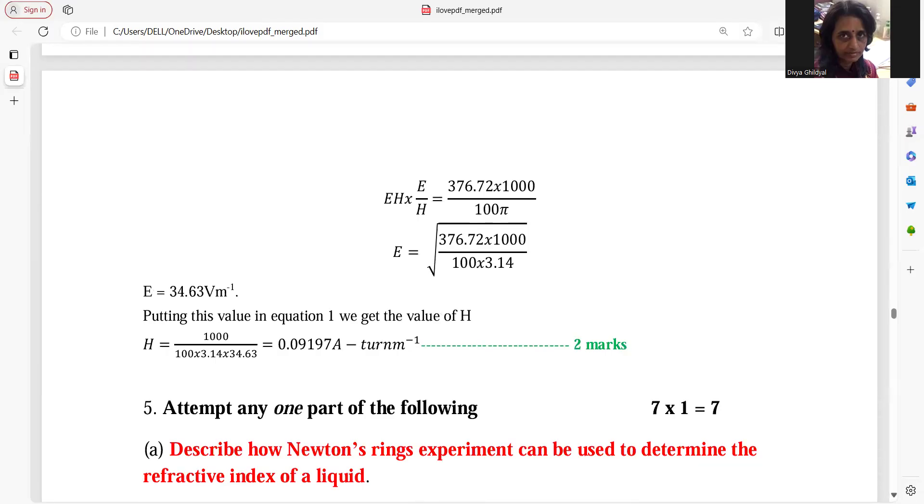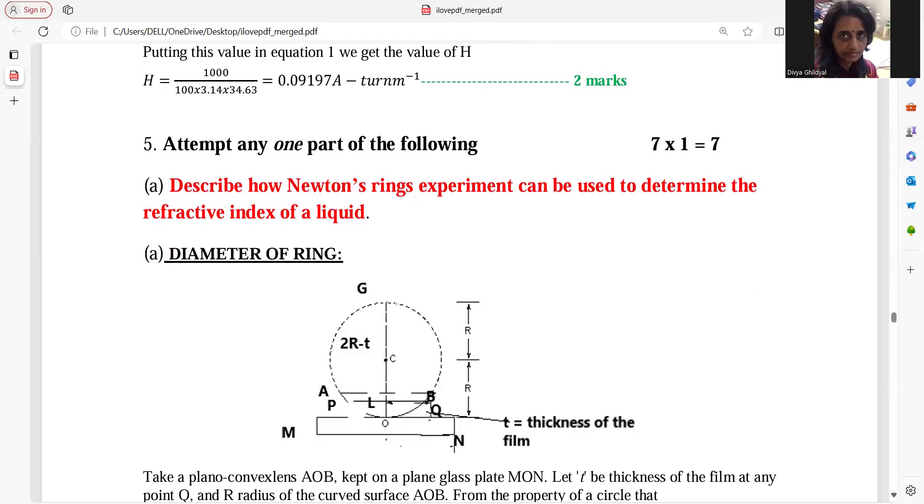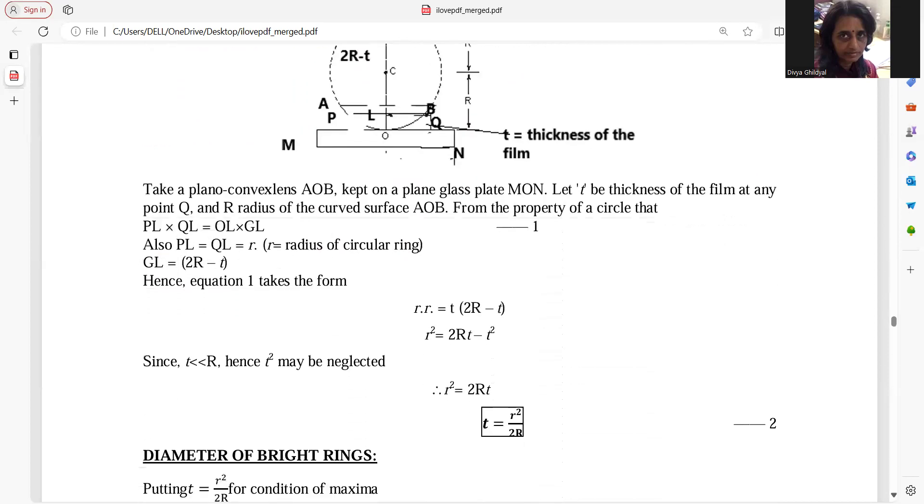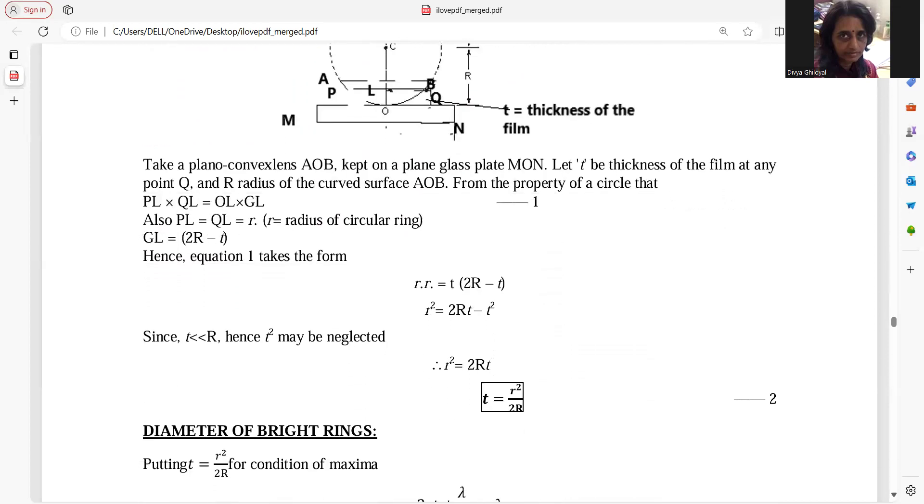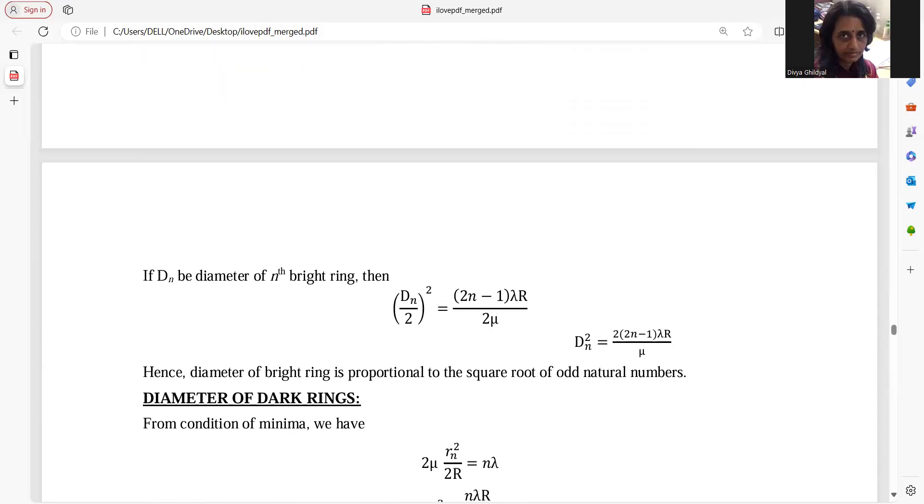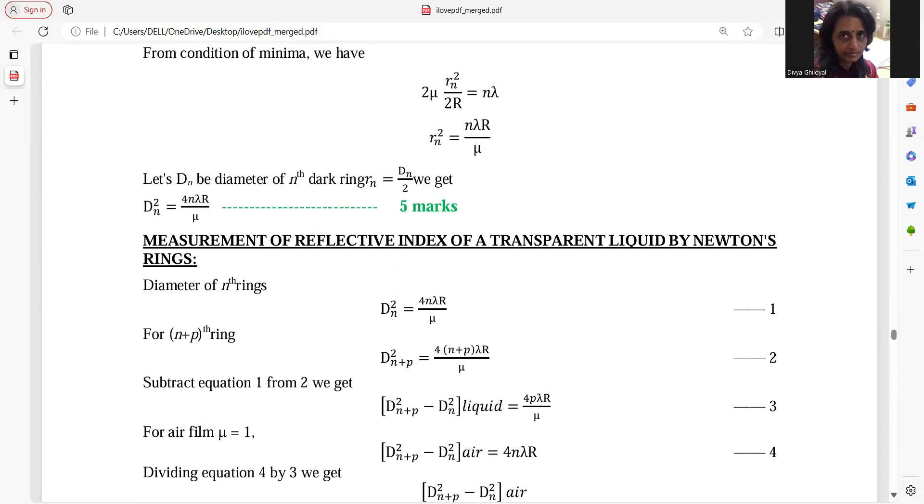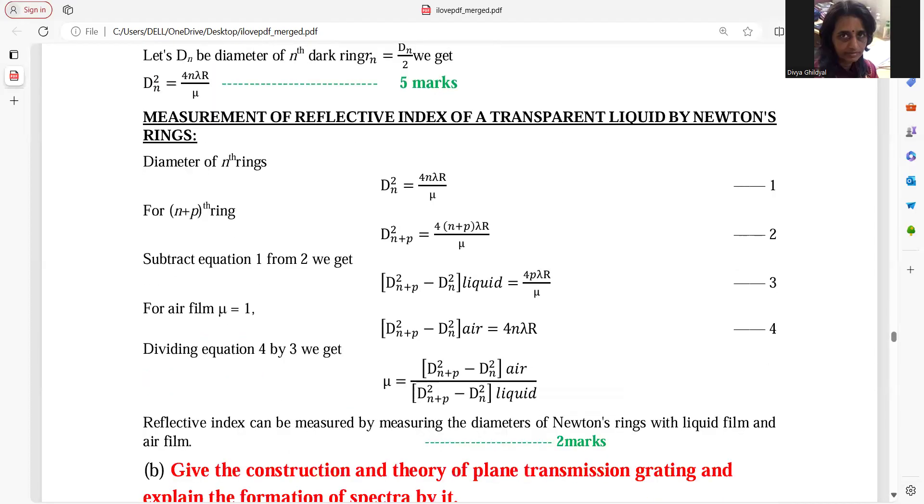Newton ring experiment. Already you must have discussed it in your laboratory exams. You just have to explain them how they help in determining the refractive index of a liquid. In this expression, where you were finding the diameter of the rings, you were doing it mu one. Instead of that, retain that mu like this. Show how much it comes diameter of this in terms of mu, diameter of dark ring and bright ring. And then for refractive index, you use the formula subtract and give this formula. And then how we do it for air and liquid. And this way we find the refractive index.